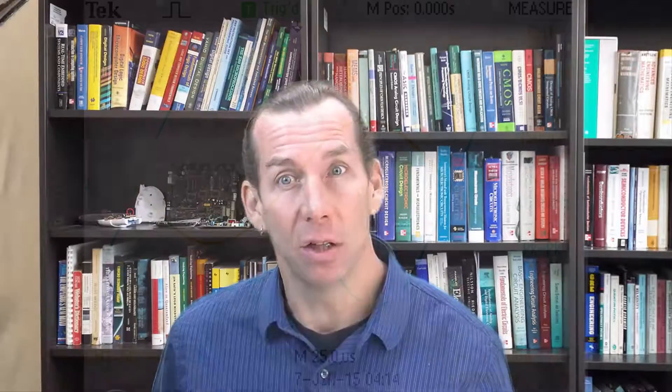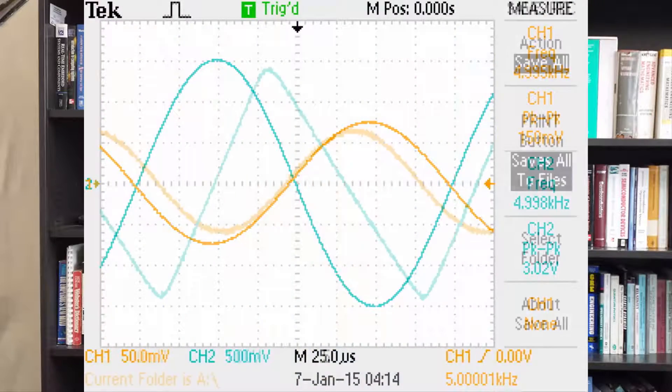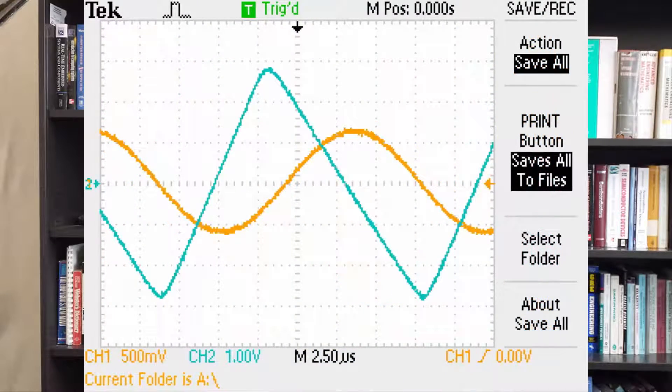To see what slew rate limiting looks like, we can turn the frequency up on the operational amplifier circuit we were working with before. I have turned it well past the initial stages of slew rate limiting so that the effect is very obvious. What we see happening is when the sine wave at the output changes at a rate faster than the output can handle, the slope of the output signal is limited to the slew rate, making our sine wave look more like a triangle wave.